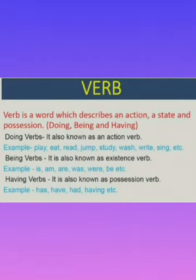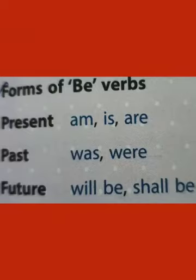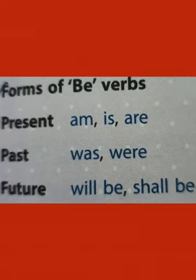Examples of being verbs are: is, am, are, was, were. They do not show any action. In forms of be verbs: is and am are used when we talk about the present; was and were are used for past tense; and will be, shall be are used when we talk about future tense.